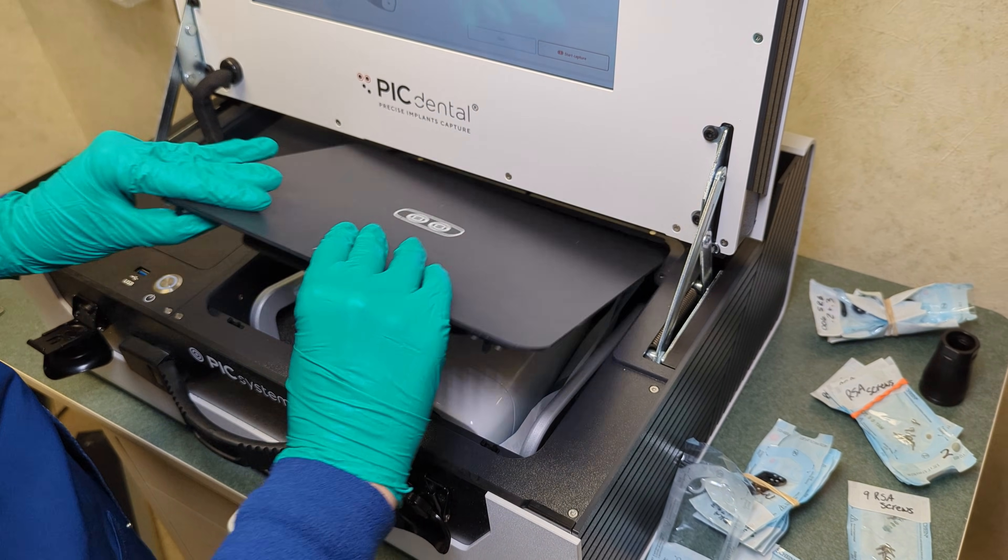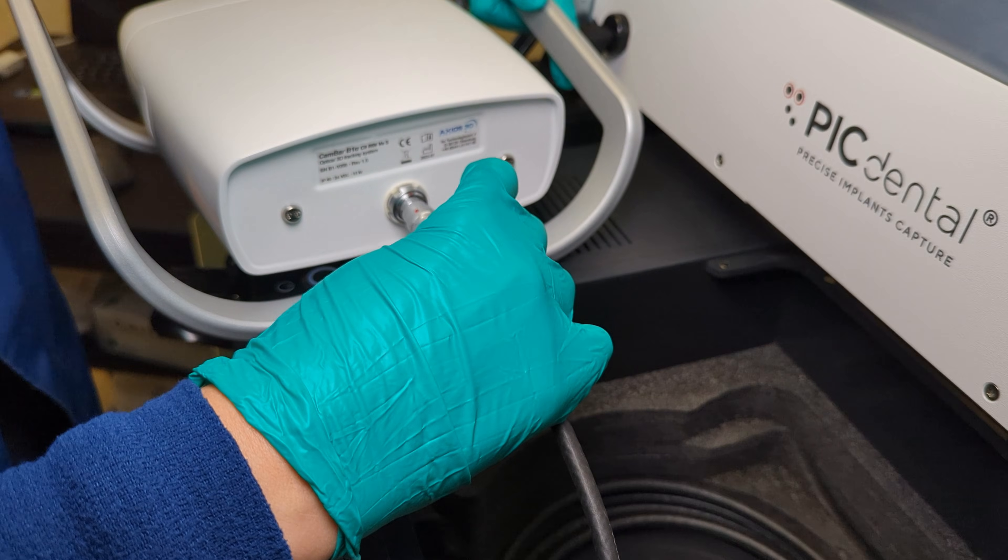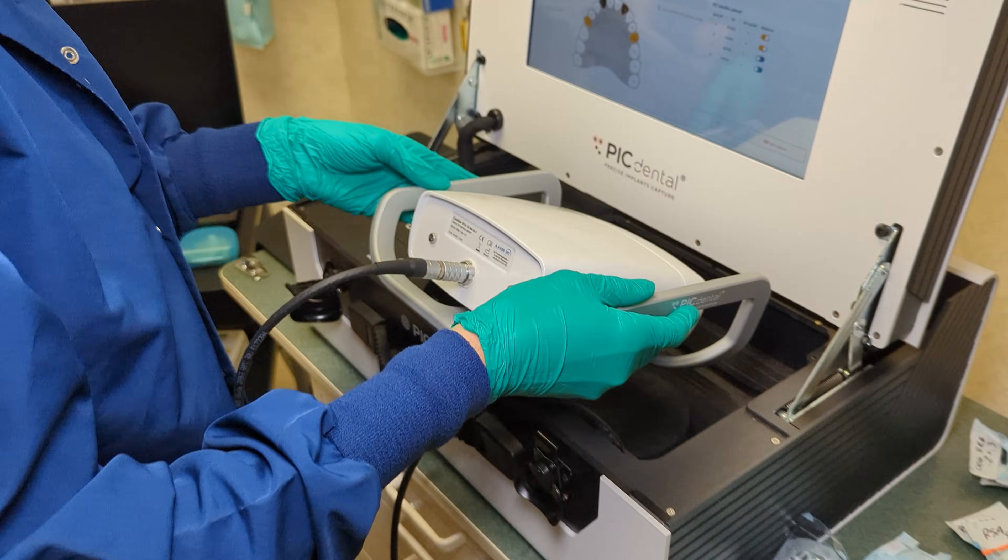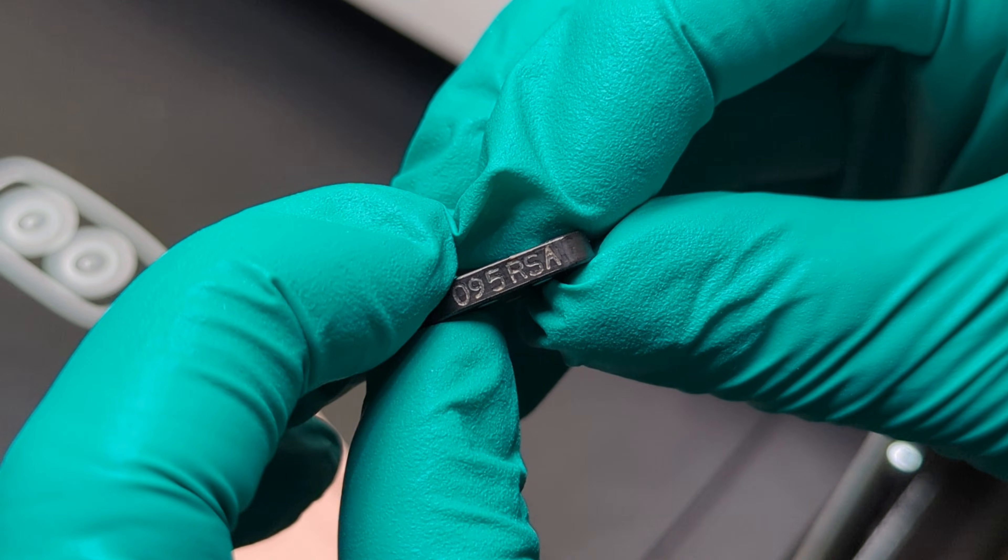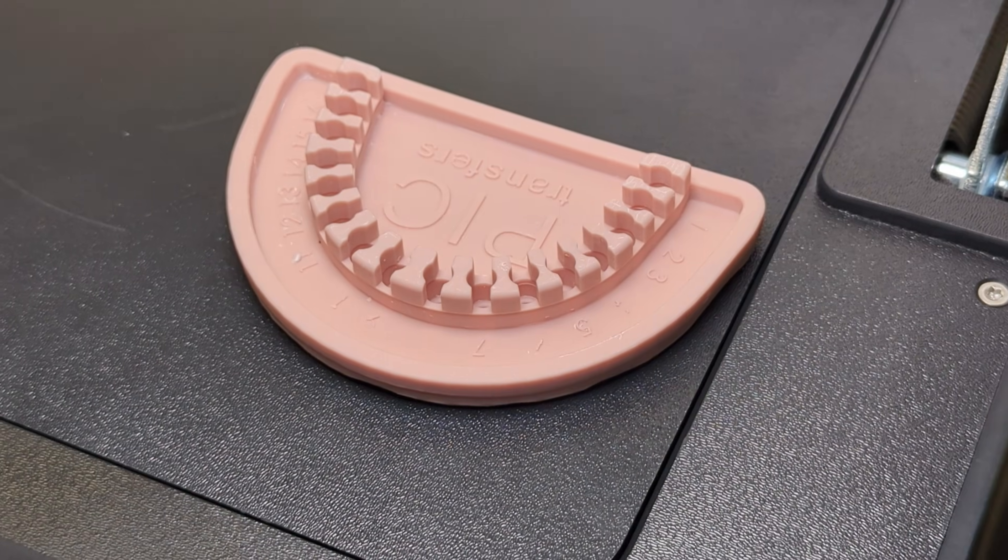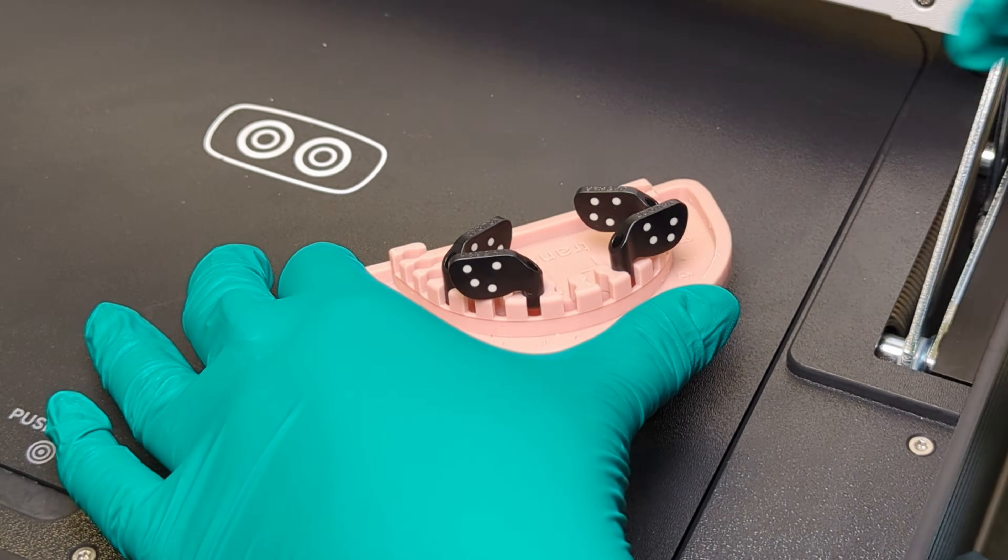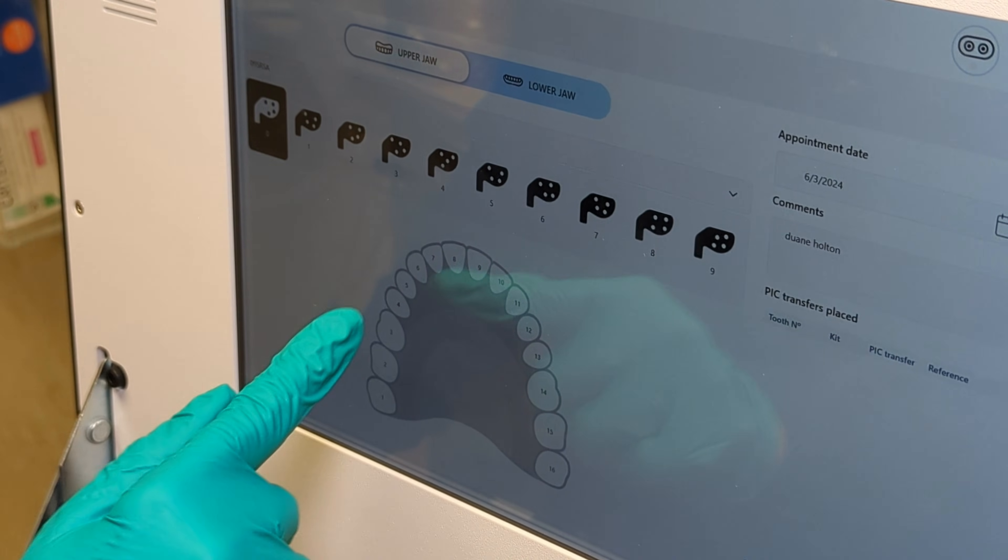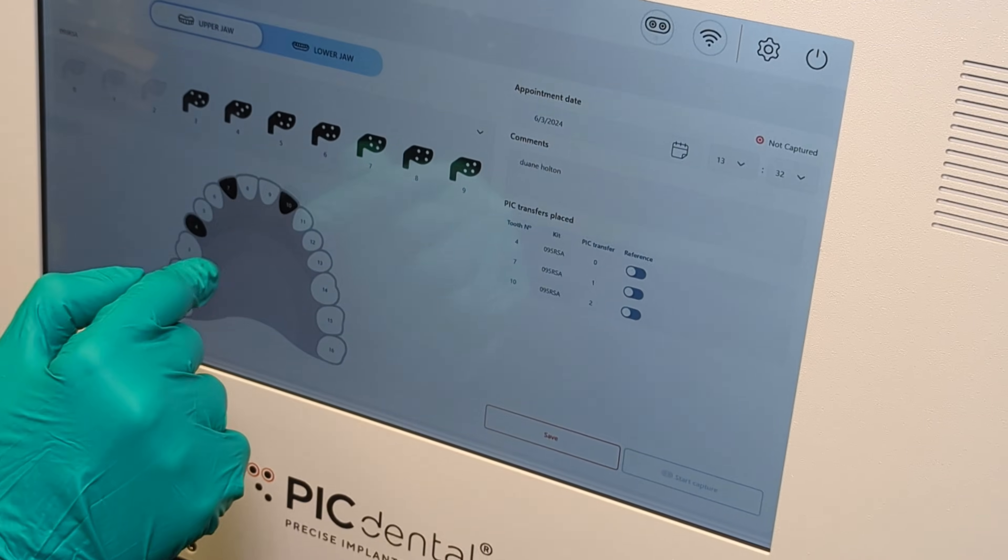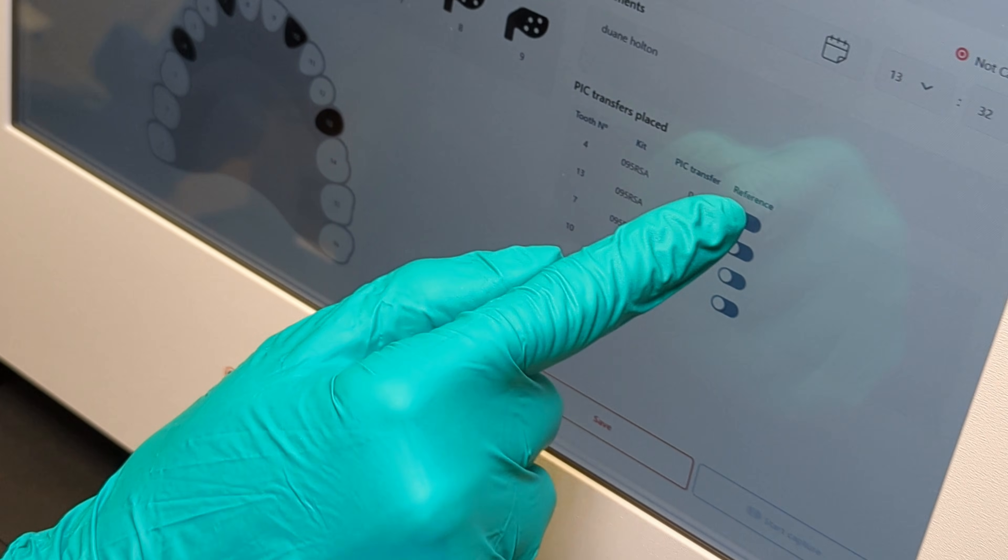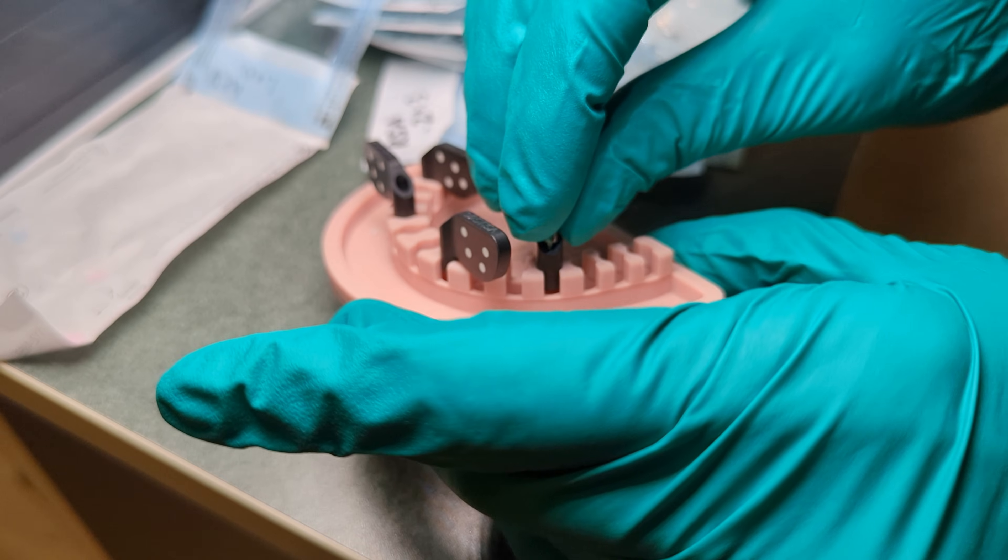Contrary to some information found online, photogrammetry is not a 3D scanner. Instead, it functions more like a camera that captures images of individually calibrated scan flags in the patient's mouth. These images are used to calculate the spatial relationships and distances between multi-unit abutments. However, it does not determine the exact coordinates of these multi-units, but rather their relative positions to each other. Each scan flag is unique and must be assigned to a specific position in the patient's mouth. Therefore, meticulous preparation and organization are essential beforehand.